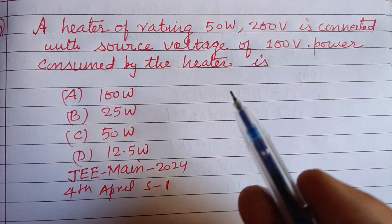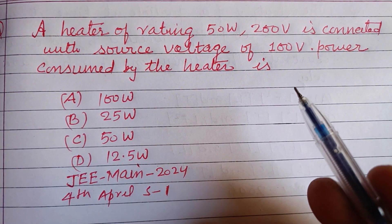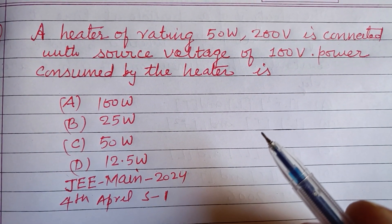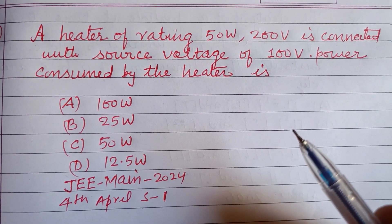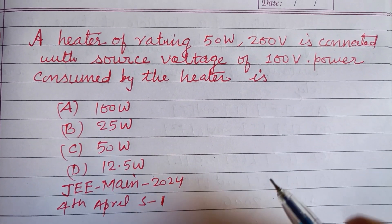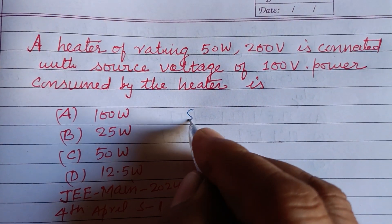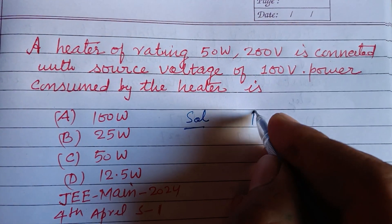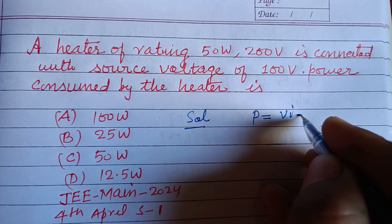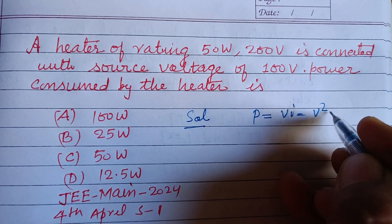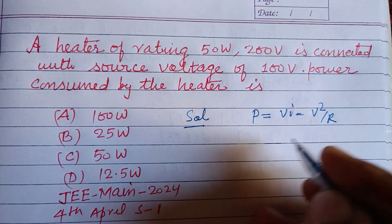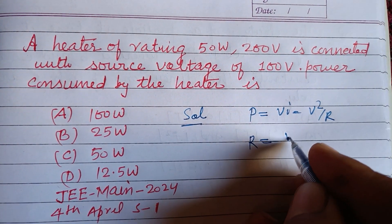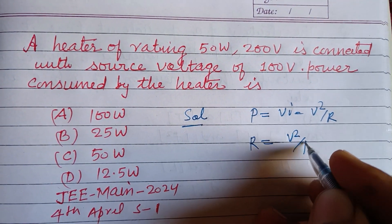First, a heater is rated 50 watt, 200 volt and is connected with a source of voltage of 100 volt. Power consumed by the heater is? In the first case, you know that power P = VI and P = V²/R, so from here R = V²/P.